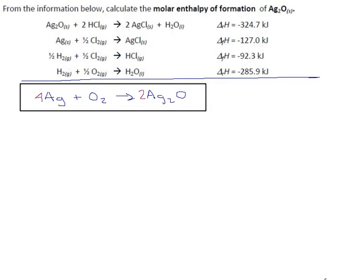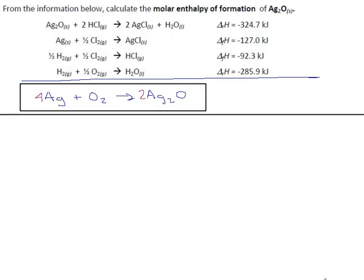We must build it and determine what its delta H is. We need four moles of silver on the left-hand side, and there's only one reaction that can help us with that. Let me number these reactions before we start making a mess: reaction one, reaction two, reaction three, reaction four. We need four times reaction two — that's the only way to get our silver.